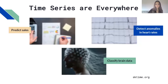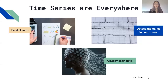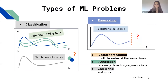Time series are actually everywhere. Whether you want to predict your sales for the next season, detect anomalies in your patient's heart rate, or classify different brain states, there are different machine learning problems that correspond to these goals. To identify the type of signal we are observing, we can solve a classification problem — we train a model on labeled data and use it to classify unlabeled data.